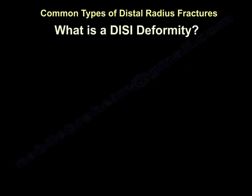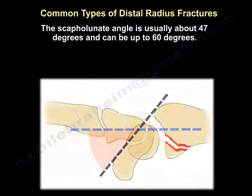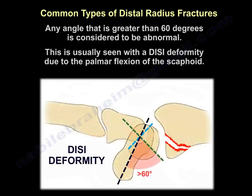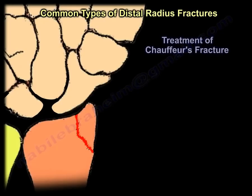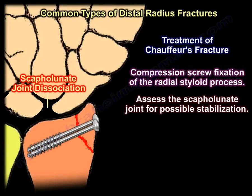What is DISI deformity? The scapholunate angle is normally approximately 47 degrees and can be up to 60 degrees. Any scapholunate angle greater than 60 degrees is considered abnormal, seen in DISI due to palmar flexion of the scaphoid — indicating scapholunate dissociation. The lunate tilts one way and the scaphoid the other; they no longer work together as a team. Treatment of chauffeur fracture is usually compression lag screw fixation of the radial styloid, followed by assessment of the scapholunate joint for possible stabilization.